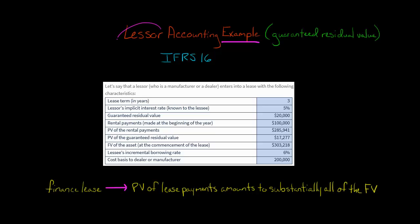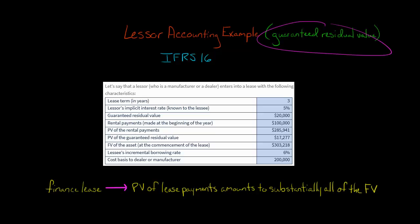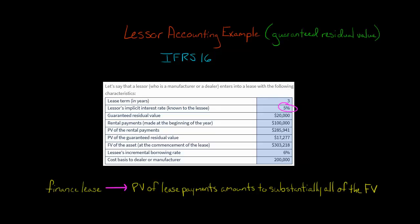Let's do an example of how a lessor would account for a lease under IFRS 16 when there's a guaranteed residual value. The lessor is a manufacturer or dealer, and we have a three-year lease. The lessor's implicit interest rate is 5%, which is what will be used for any discounting when we do our present value calculations.